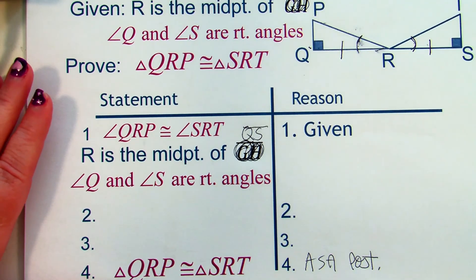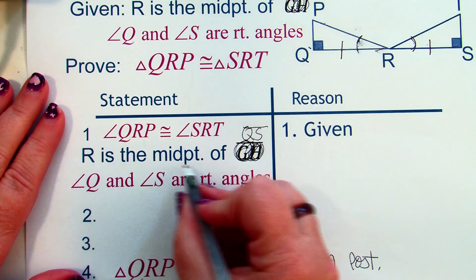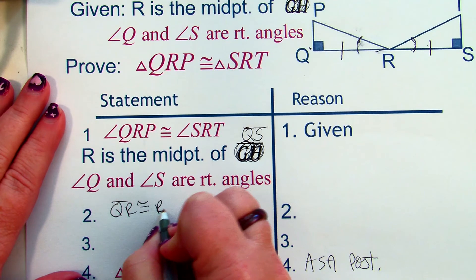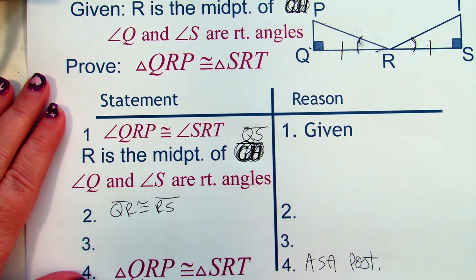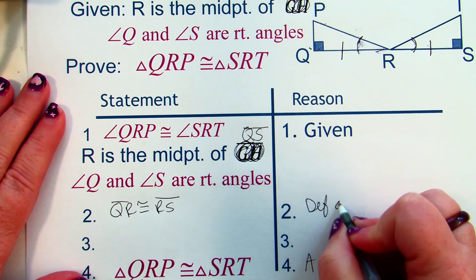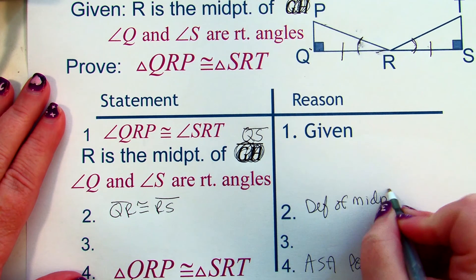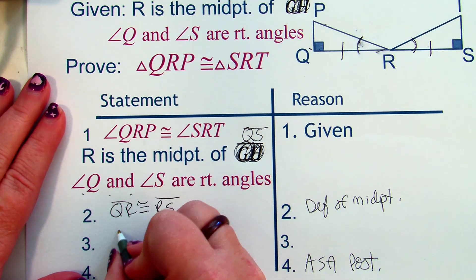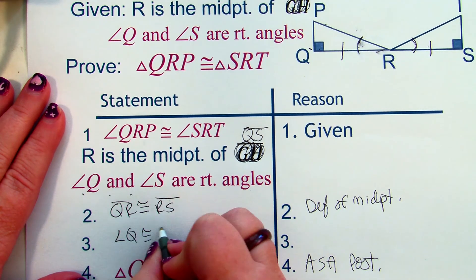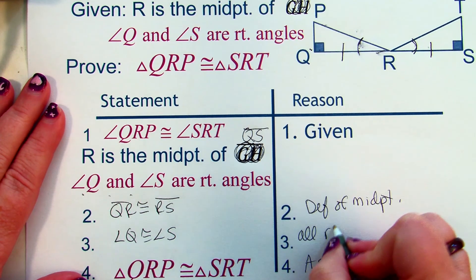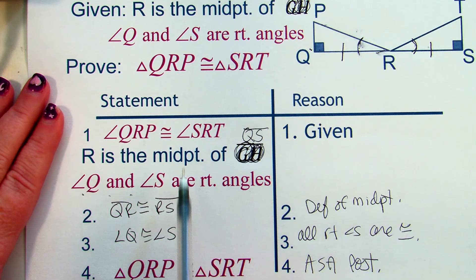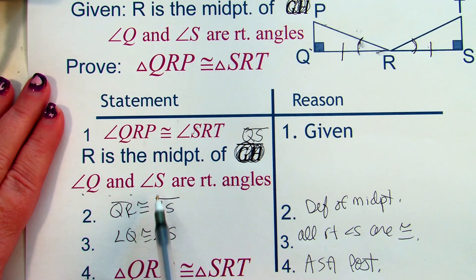So we have the given: R is the midpoint of QS, which means QR is congruent to RS by the definition of midpoint. Then angle Q and angle S are right angles, so angle Q is congruent to angle S because all right angles are congruent. Right here we have angle, side, angle — ASA postulate.